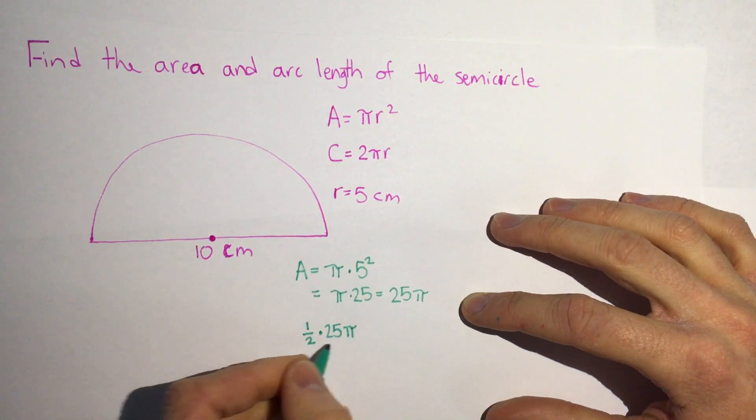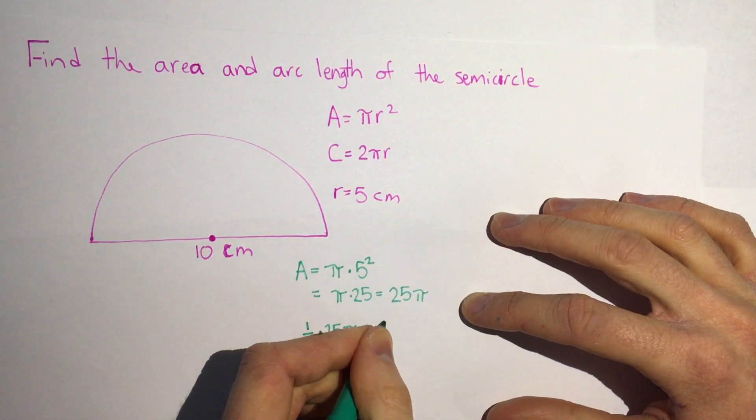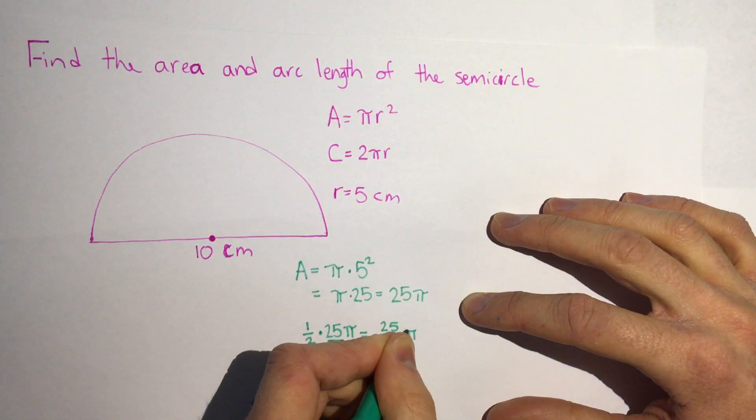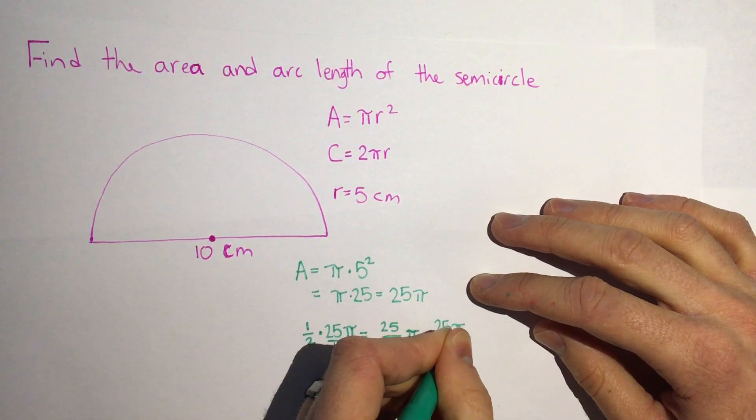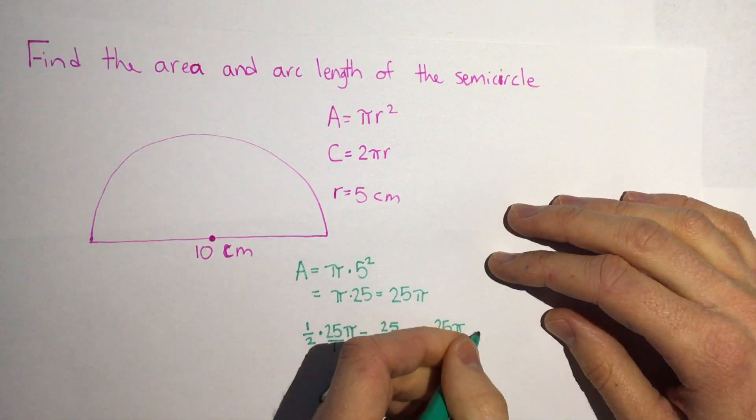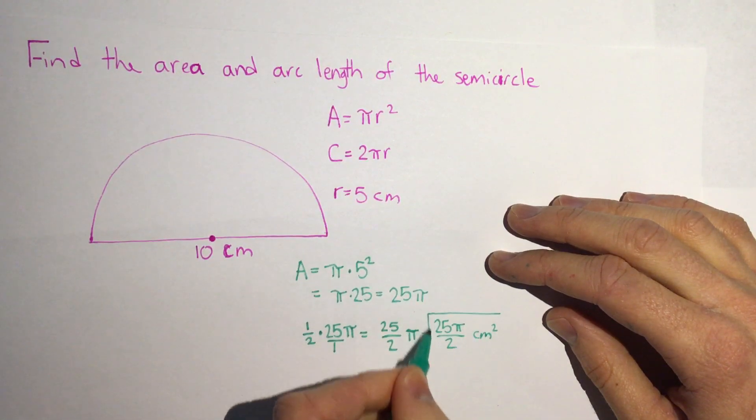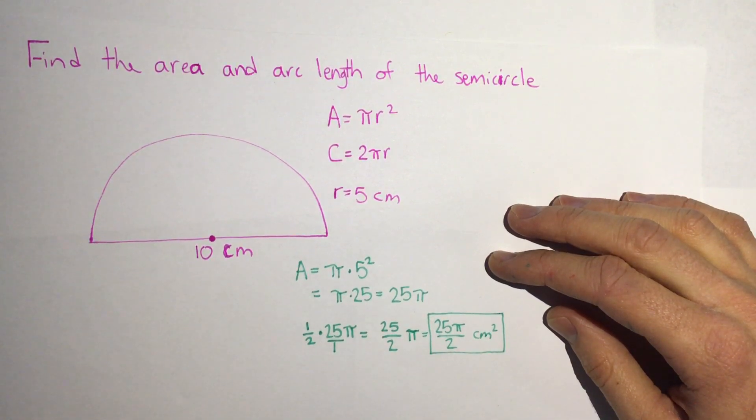1 half times 25 pi, we can put 25 over 1, 1 half times 25 over 1 is 25 halves pi or we can write it as 25 pi over 2 and we don't want to forget our units because it's area, centimeters squared and that would be our answer and if we want a number for that we can always put it in our calculator.